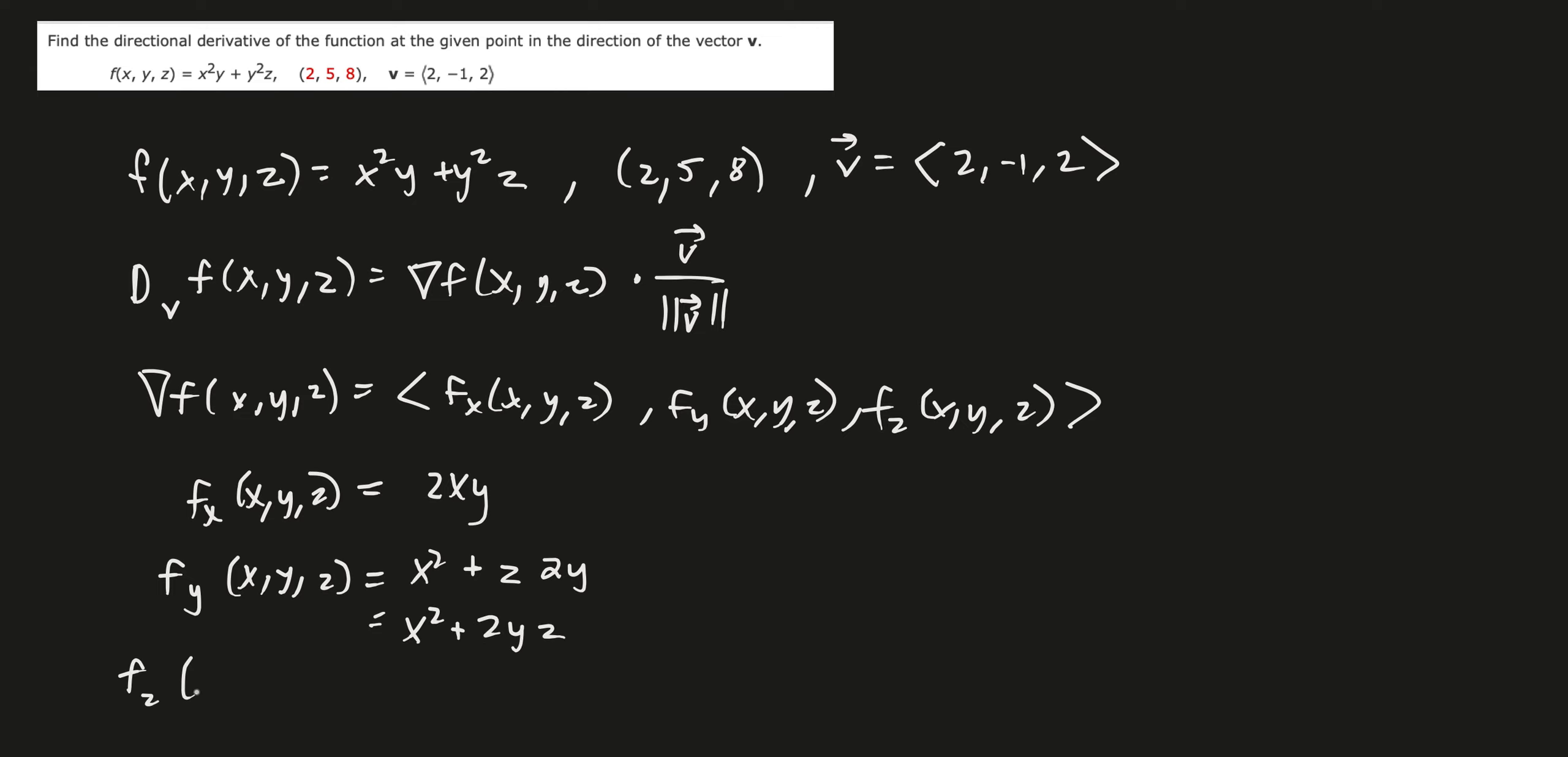And then partial derivative with respect to z is going to be treating x and y as a constant. So it's going to be y squared.